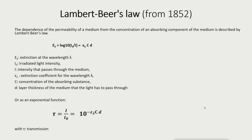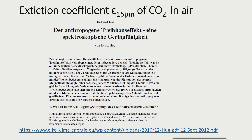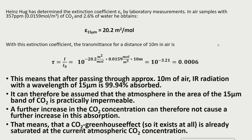If the extinction coefficient of CO2 in air for the wavelength 15 micrometers is known, this equation allows us to calculate how a beam of 15 micrometer radiation is weakened during its way through the atmosphere. Since this extinction coefficient was not previously published, Heinz Hug determined it by laboratory measurements and used it to estimate the effect of the doubling of the atmospheric CO2 concentration on the greenhouse effect and global warming. In air samples containing 357 ppmv CO2 — equal to 0.0159 mole per cubic meter — and 2.6 percent water vapor, he measured an extinction coefficient epsilon at 15 micrometers of 20.2 square meters per mole.